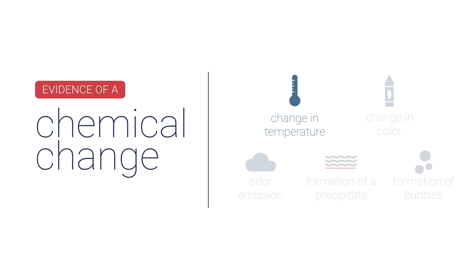And so here's a list of some evidence of a chemical change that you should look for as you're carrying out reactions. If there's a change in temperature, that's certainly evidence of a chemical change. Some reactions heat up, some reactions cool down, so change in temperature is evidence of a chemical change.